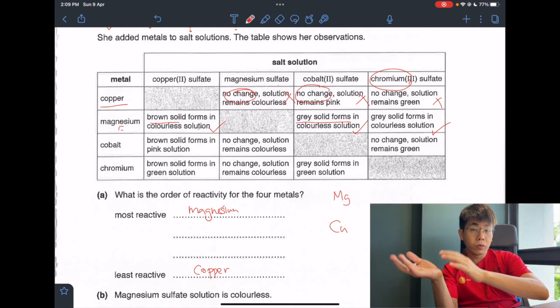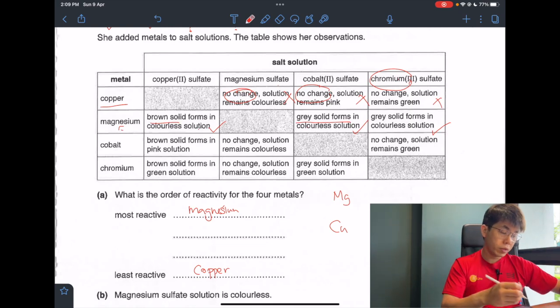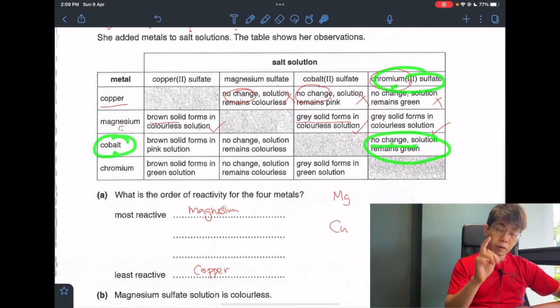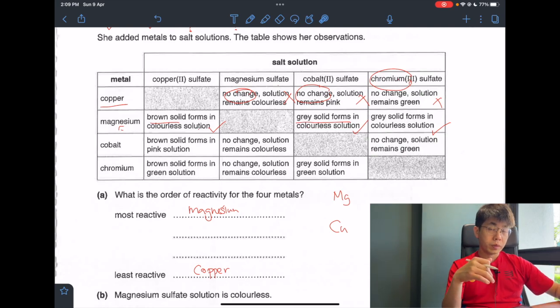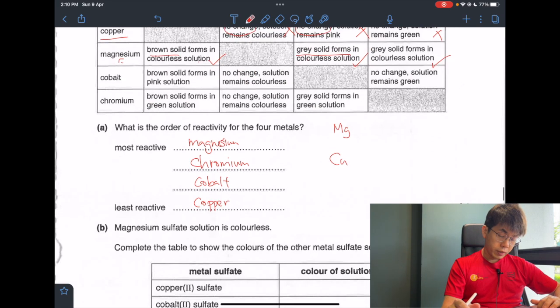If cobalt can displace chromium, cobalt is more reactive. If cobalt cannot displace chromium, cobalt is less reactive than chromium. So let's look at cobalt with chromium sulfate. We can see that cobalt cannot displace chromium. That will mean that cobalt is less reactive than chromium. In order to confirm our hypothesis, chromium and cobalt sulfate - you can see that chromium can displace cobalt. So chromium displaces cobalt, you get the grey solid. That means chromium is more reactive than cobalt.